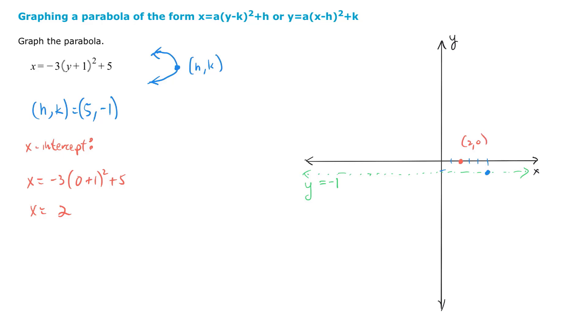We have our vertex, which is 5 comma negative 1. And why don't we figure out what our symmetric point is? So it's got to be what? 2 negative 2. So over here, we should have an ordered pair. 2 negative 2. Right there. That is our symmetric point. So this is 2 negative 2.